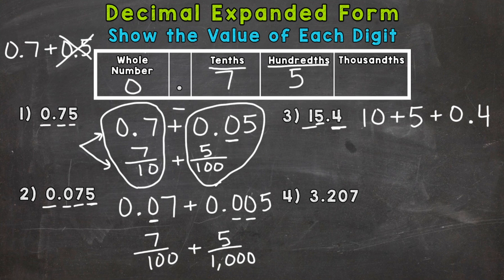So fractional form, the whole numbers are going to stay the exact same. The decimal, however, is going to be four tenths.